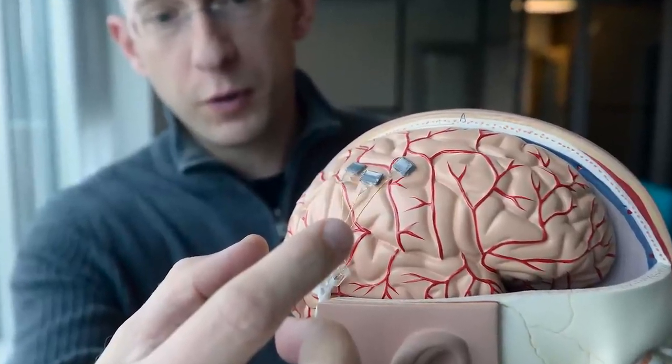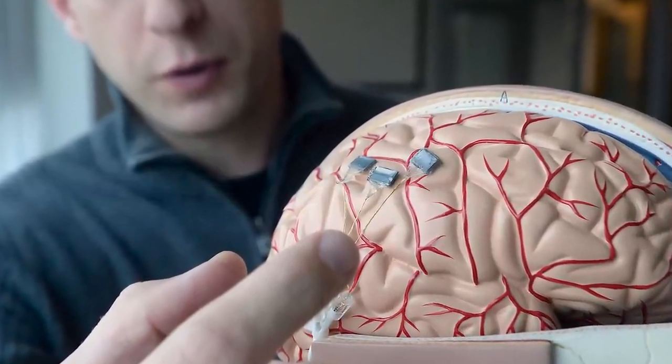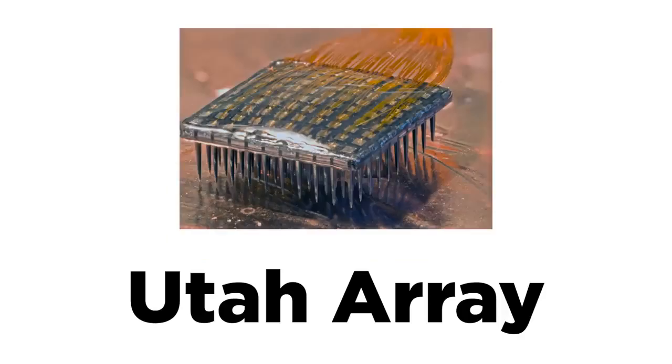So to get a good connection to the brain, we need to go invasive with our BCI, and that's where things get gruesome. The current industry standard for invasive BCI is something called the Utah Array. It's a square computer chip with a whole ton of spikes coming out of it. I'll give you one guess where those spikes are going. Yeah, into the brain.